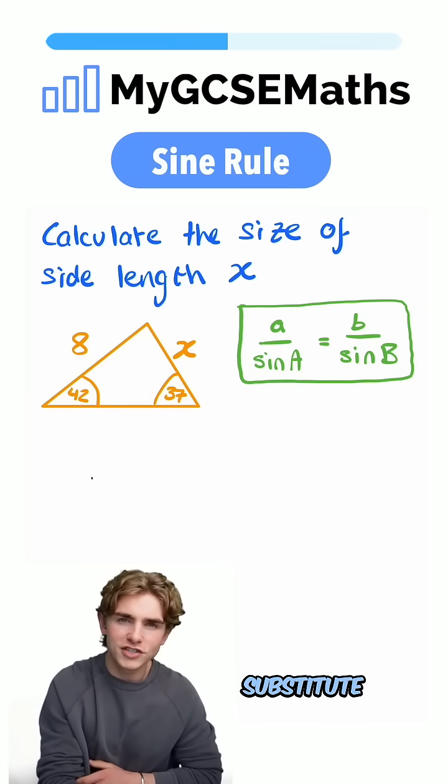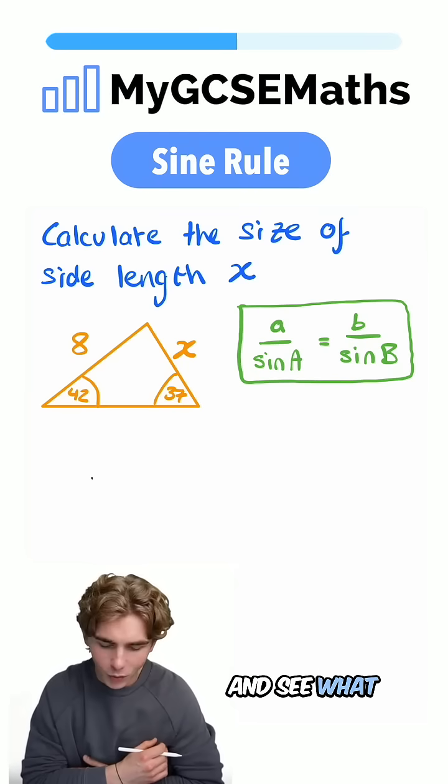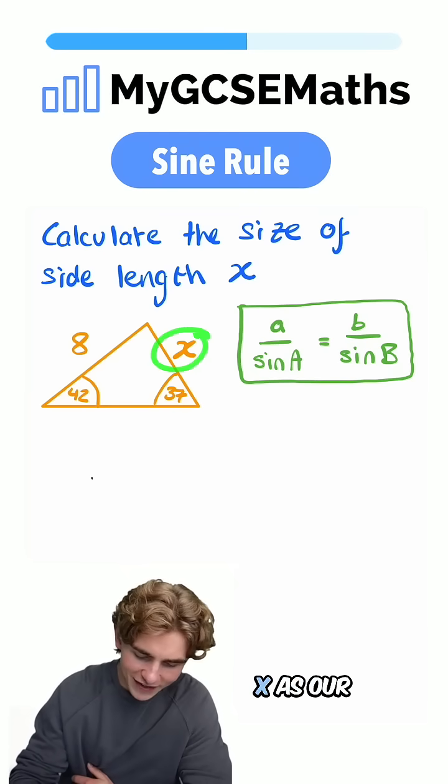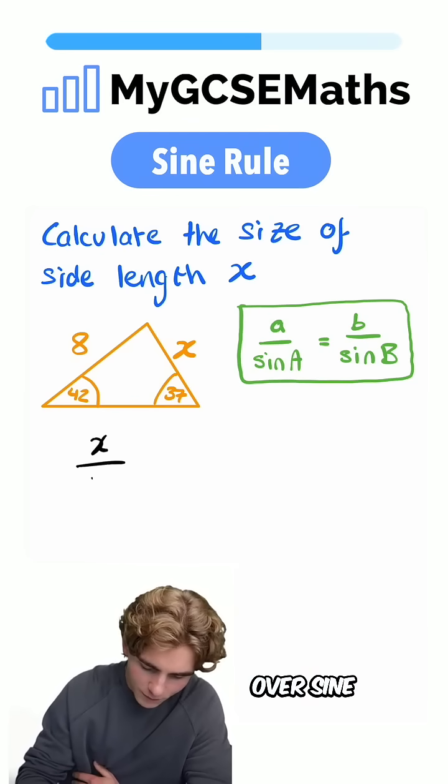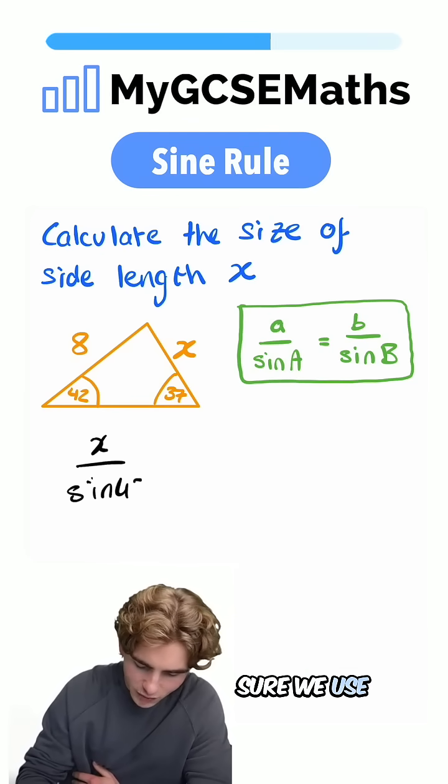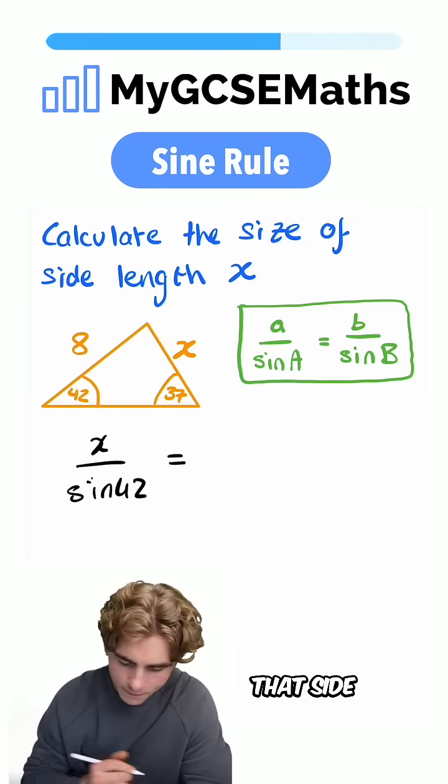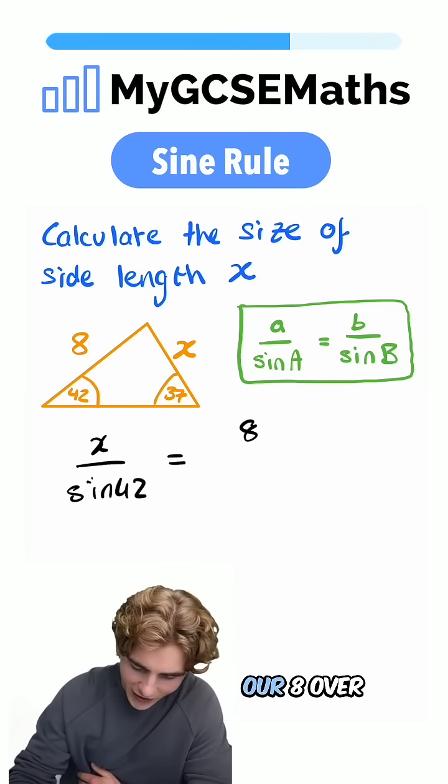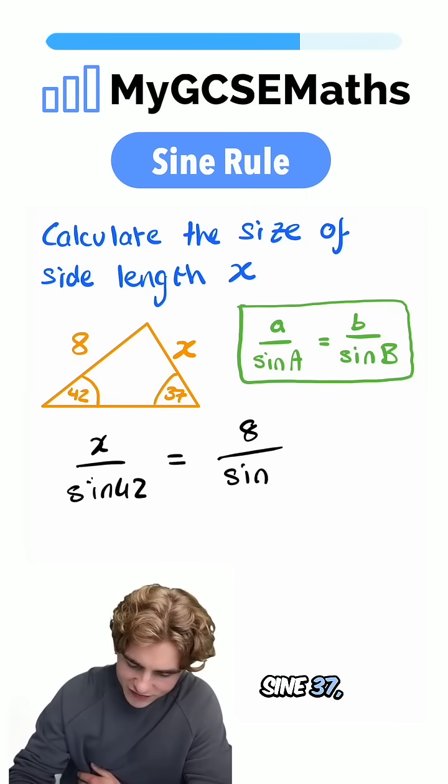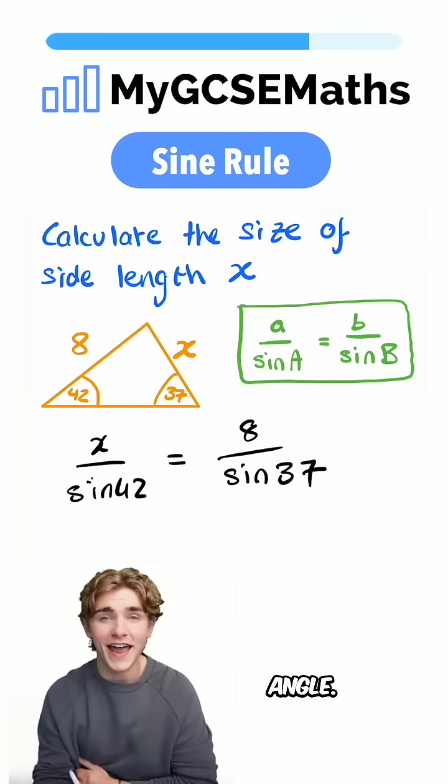So we're going to substitute in our angles and side lengths and see what we get. We're going to have our x as our lowercase a, so we have x over sine 42, making sure we use the angle which is opposite that side, equals b, which is going to be our 8, over sine 37, which is our other opposite angle.